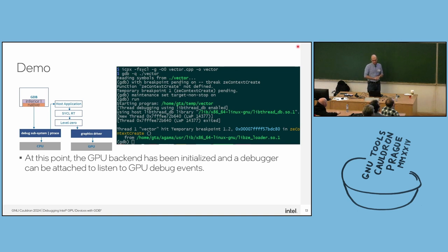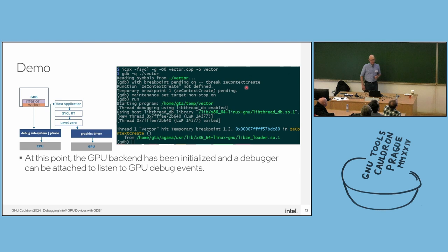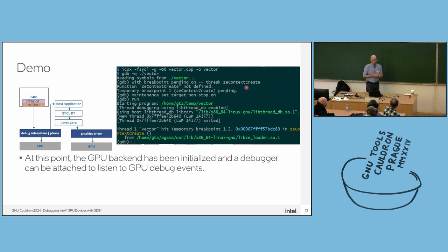Starting from the beginning, the user needs to compile the code using '-g -O0', then run the program in GDB. Next, we define a breakpoint at the Level Zero API function — in this case, zeContextCreate. This is a function invoked after the backend is initialized but before the workload is actually offloaded, giving us a nice moment to attach to the GPU as a debugger.